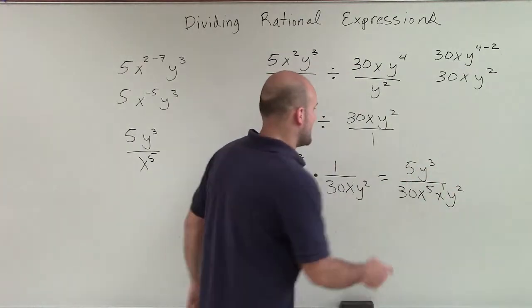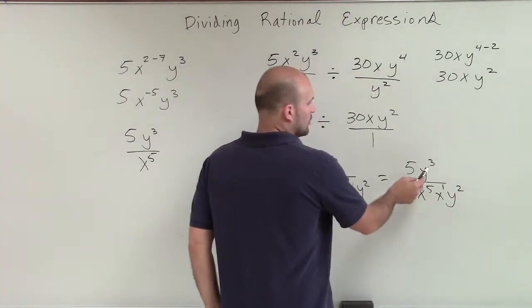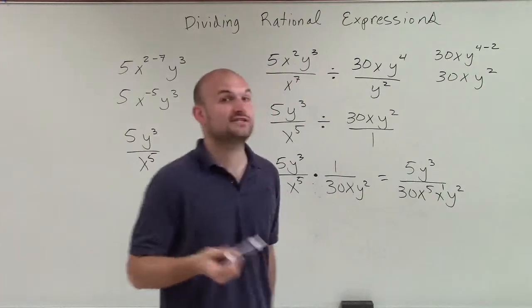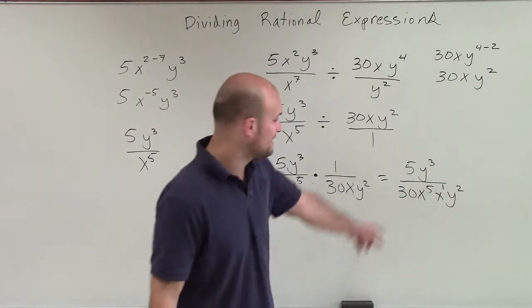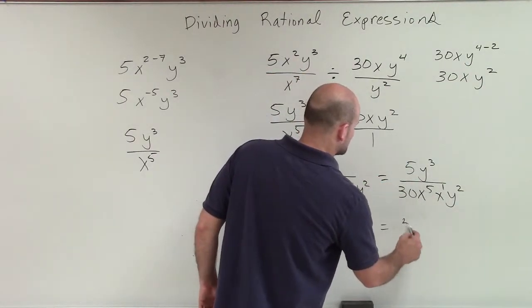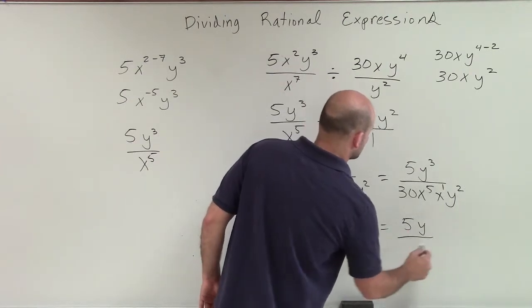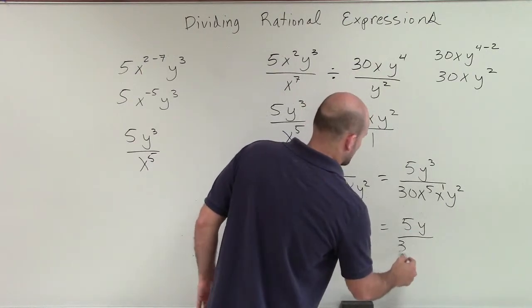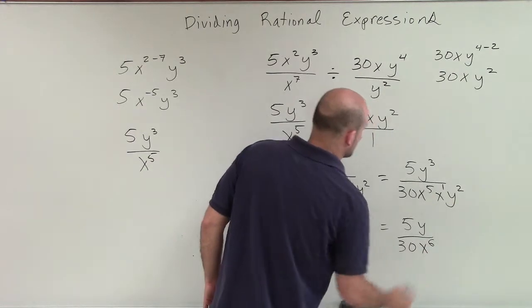And then here, since I'm dividing, I'm going to subtract. So 3 minus 2 is going to be y to the first power. And since that's positive, it's going to remain in the numerator. So my final answer is going to be 5y divided by 30x to the 6th power.